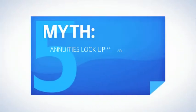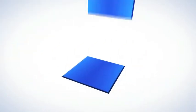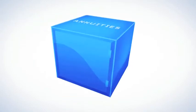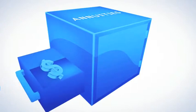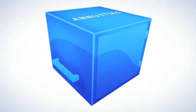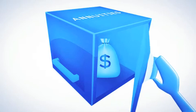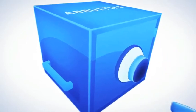Myth number five: annuities lock up your money so you can't access it for years. The truth is, though many annuities are designed to be long-term income products, today's annuities offer various ways for you to access the money if something should happen. Most annuities give you access to at least a portion of the money each year. Some annuities may specify a waiting period before you can access the money in them, but you can still withdraw money if you need to, though certain fees and penalties may apply, including income tax and tax penalties.